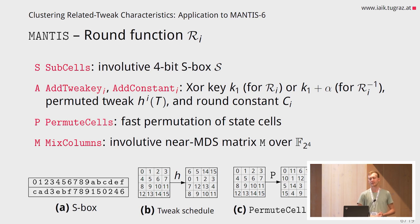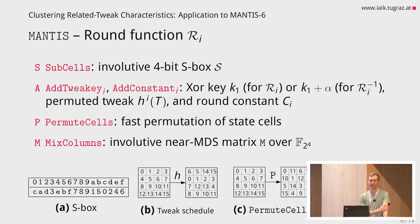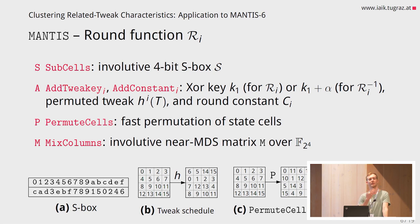The round function of MANTIS has very lightweight operations: a 4-bit involutive S-box taken from Midori, the add-key and add-constant steps, a very fast permutation of the state cells, and a very lightweight near-MDS matrix for the mixed-column step. There is also a tweak schedule used in the Tweaky schedule to permute the current state of the tweak.